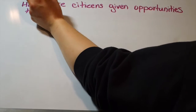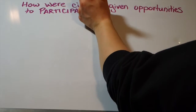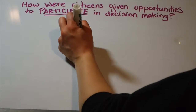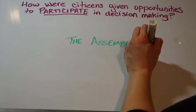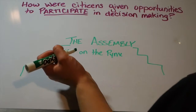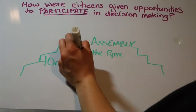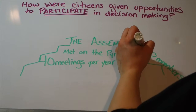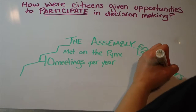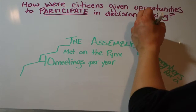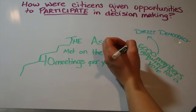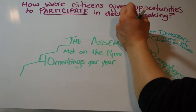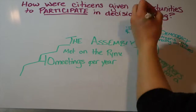So how were citizens given opportunities to participate? Participate is the key word — in decision making. This is all ancient Athens. So again, we're starting with the assembly, that's the big group. They met on the Pnyx, which you saw in the very first picture. They had 40 meetings per year — that's every 8 to 10 days. There had to be at least 6,000 members in attendance for a vote. Imagine how long that would take. This is an example of direct democracy, or when citizens vote directly on issues.